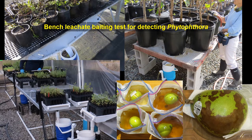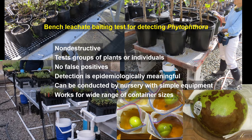We worked on a method to efficiently test large numbers of nursery plants using known principles in recovery of Phytophthora from nursery plants. This bench leachate baiting test is a type of baiting methodology with a lot of advantages over many tests. It's non-destructive. We can test individual plants or groups of plants using this method. There are no false positives — we actually recover the pathogen in the test. The detection is epidemiologically meaningful: if we actually detect in the test, we're detecting live infective inoculum, enough to infect the bait, and if it's enough to infect the bait, it's enough to infect other things, and it is actually being dispersed from those plants every time you irrigate.